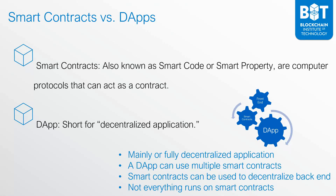Not everything on a dApp needs to run on smart contracts — in fact, some things can't. For example, the front end of a web application or any decentralized application needs to be programmed in a different language, such as HTML, JavaScript, or CSS. Solidity, which is the language used to program smart contracts, cannot help you create that front end. As a result, the dApp needs to do more than merely have smart contracts — you need the other functionality as well.